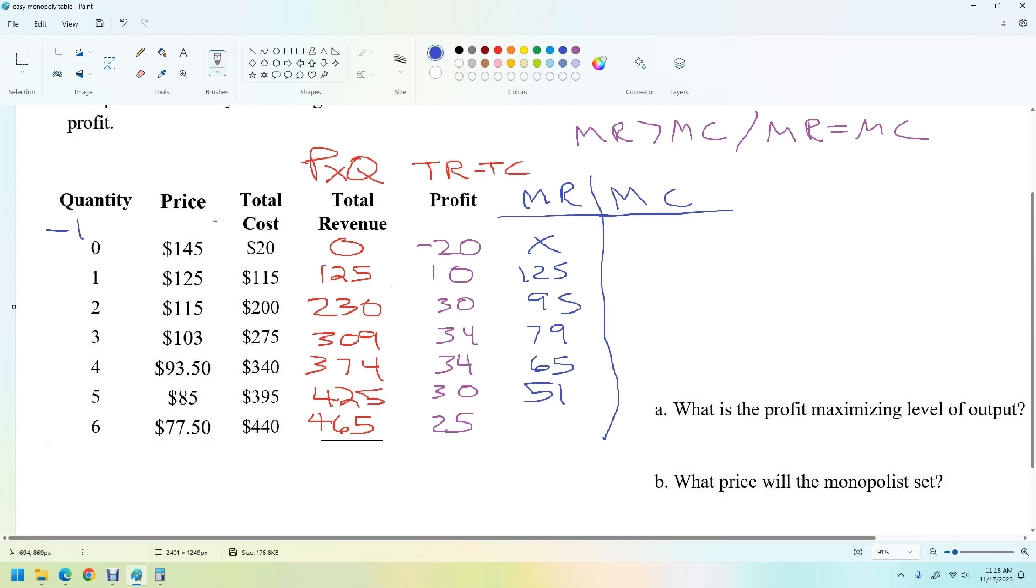The change here would be 26 plus 25, 51. The change here, 75 plus 65, I better grab the calculator here. 75 plus 65 is 140. That can't be right.